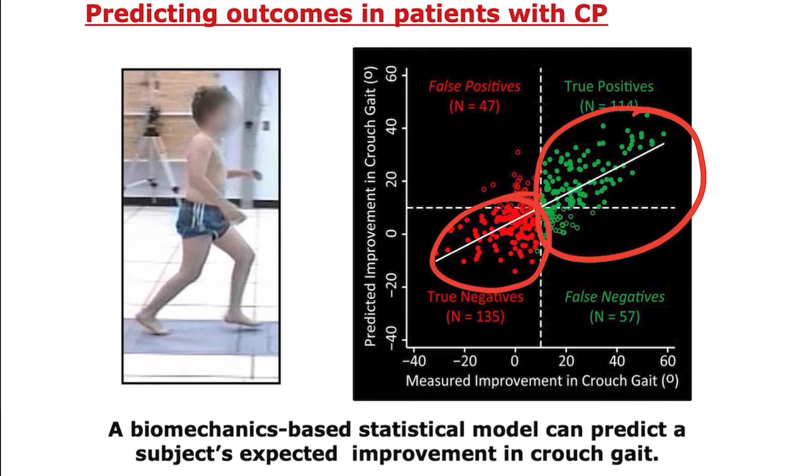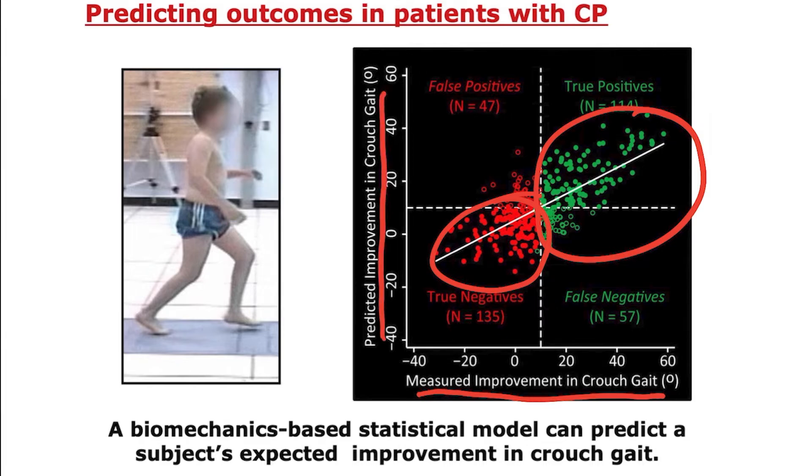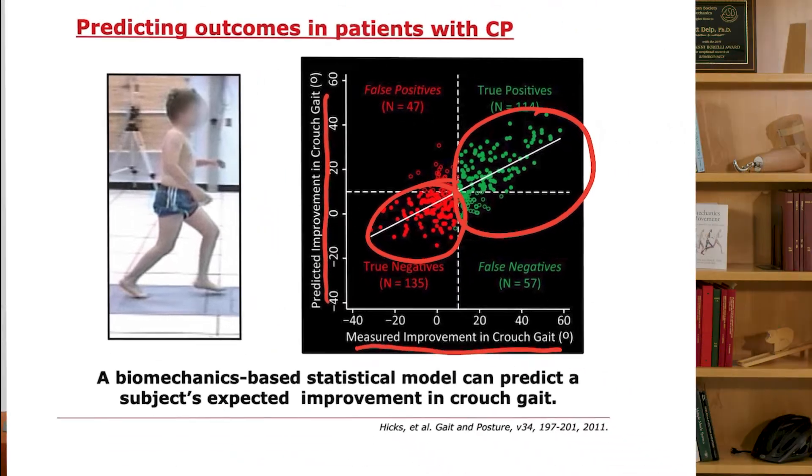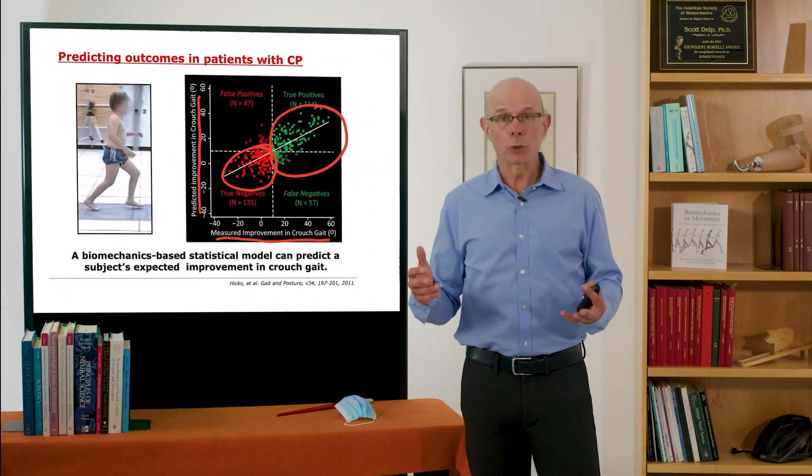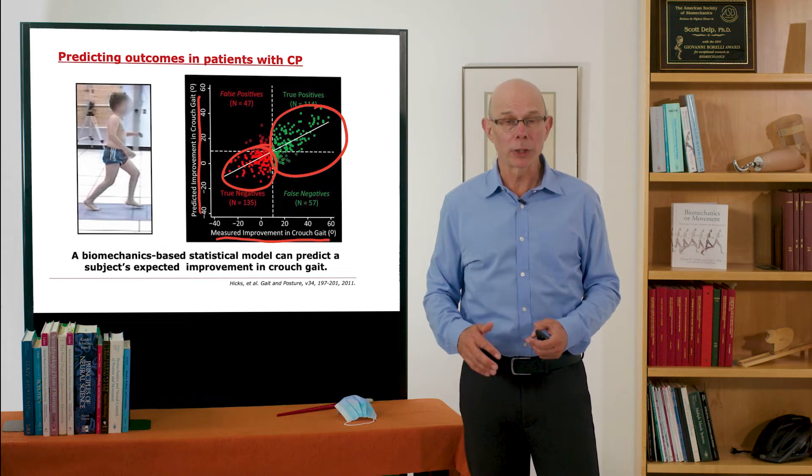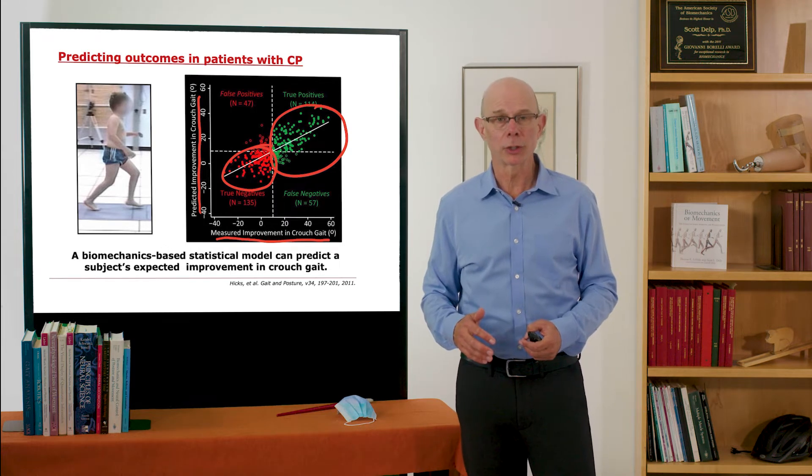So the true positives and true negatives say that this is an improvement in crouch gait actually measured versus predicted. So we got about 75% right. That was better than we do clinically. It's better than we do just using our intuition about making surgical decisions.